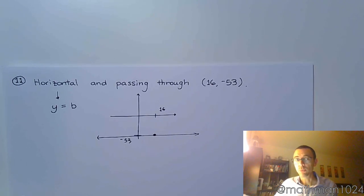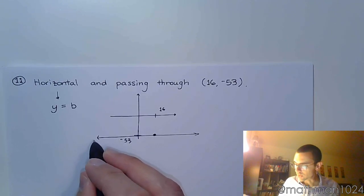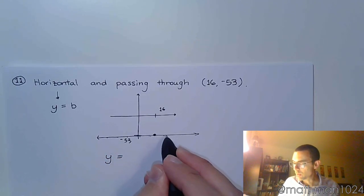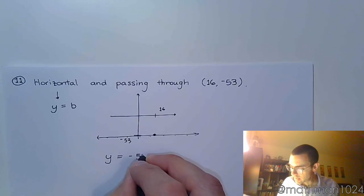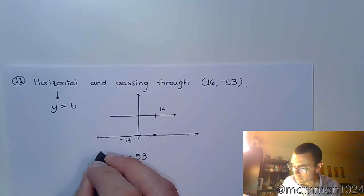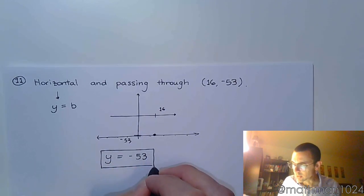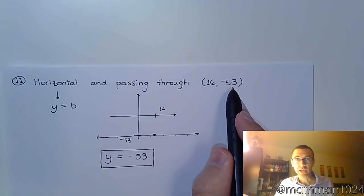And again we know that horizontal lines take on the form of y equals. Well what does y equal in this case? For this horizontal line, every single point on here has a y value of negative 53. And that's your equation. There was no slope to find or identify here. It was just a horizontal line. So it was y equals a number, y equals negative 53.